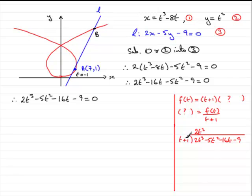Multiply 2t squared with t plus 1 and you get 2t cubed plus 2t squared. We now subtract these two to find out what the remainder is. And if we do that, 2t cubed minus 2t cubed is 0. And then you've got minus 5t squared minus another plus 2t squared. So that's minus 7t squared. Bring down the next value, minus 16t.